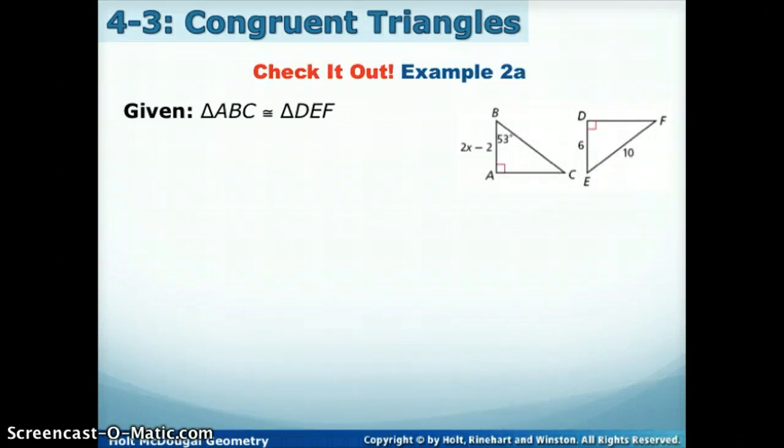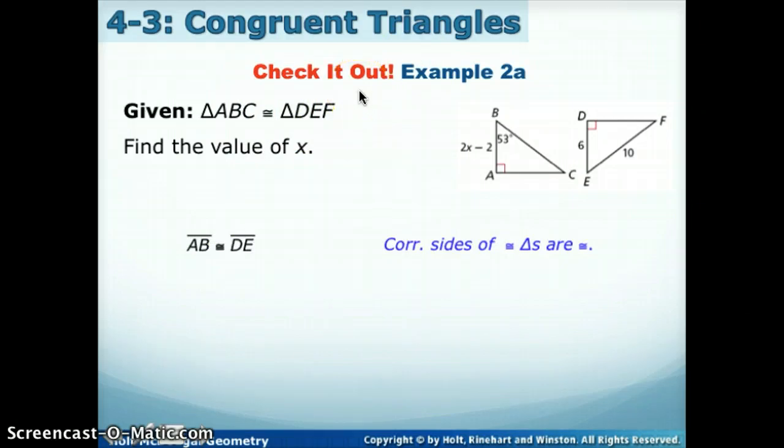We'll try one more that are similar to these. It says given that ABC is congruent to DEF, we're going to find the value of X. So if I look in the picture, I see that the only measure that has an X in it is AB. So I'm using a side. If I look in the congruent statement, AB, the first and second letters, I just learned should be congruent to lines DE, because they're in matching positions in the triangle. So they're corresponding sides of congruent angles, which means they are congruent.